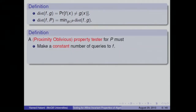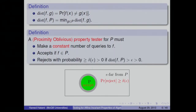In most of this talk I'll discuss proximity-oblivious testing, which means the number of queries is just a fixed constant — like 5 or 10 — not allowed to change according to any parameters. Given a function f, I make this constant number of queries and want to distinguish two cases: if f satisfies the property I always accept it with no error allowed; if f is epsilon-far from the property, the probability of rejection is bounded away from 0 by some delta depending on epsilon but not on f.